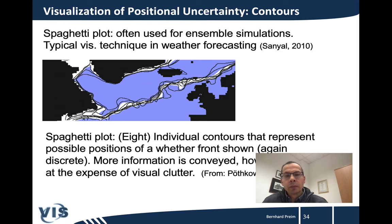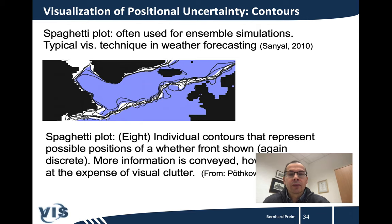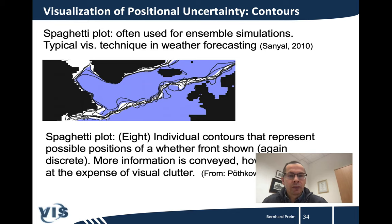From an ensemble simulation, all possible outcomes can be visualized — what we earlier called a spaghetti plot, where each contour resembles one spaghetti. These are positions of a weather front. This approach is a bit more confusing; the techniques presented before are better suited. But here you see the actual data derived from the ensemble simulation, which was then used to fit a probability distribution. From that distribution, variance and confidence intervals were computed as input for the crisp and fuzzy contour techniques on the previous slide.